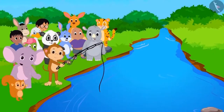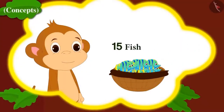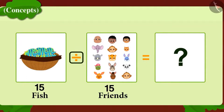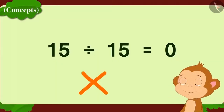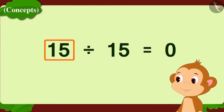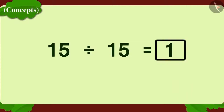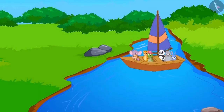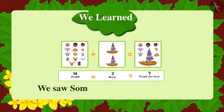Babban wants to divide the fish equally among 15 of his friends and quickly wrote down a division. But Babban has written it wrong. Whenever we divide a number by itself, the answer will always be 1, as every person will get one object each. In this lesson we saw a few important concepts about division.